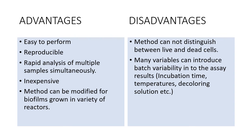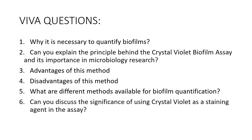Advantages of this experiment: it is easy to perform, reproducible, allows rapid analysis of multiple samples simultaneously, and is inexpensive since you only need the decolorizing agent, crystal violet solution, and a spectrometer. The method can also be modified for biofilms growing in a variety of reactors or environments. Disadvantages: this method cannot distinguish between live and dead bacterial cells, which may introduce variability. Many variables such as incubation time, temperature, and decolorizing solution can also introduce batch variability into the results.